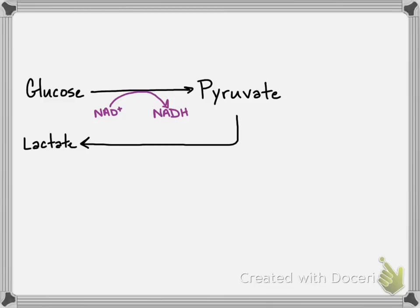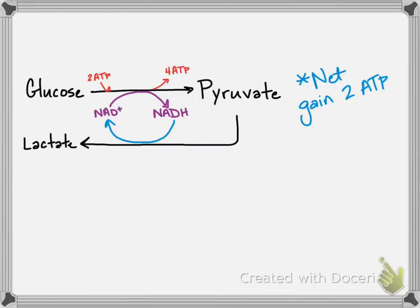That pyruvate can be converted into lactate, restoring the NAD+. You'll still invest 2 ATP, you'll still get out 4 ATP, so you'll still net gain 2 ATP. But the big key thing here is that you're recycling NAD+, you're keeping glycolysis going.